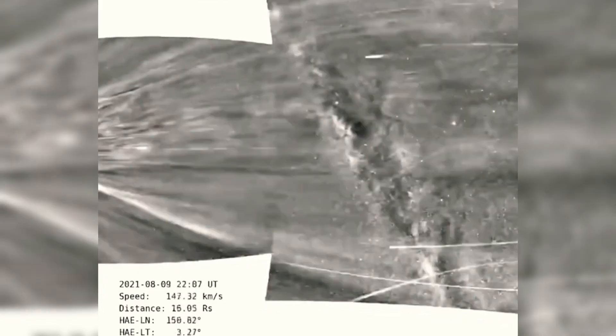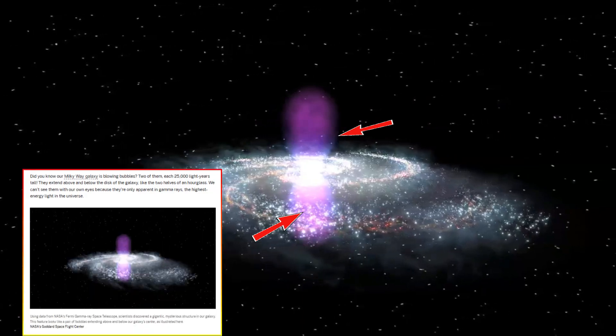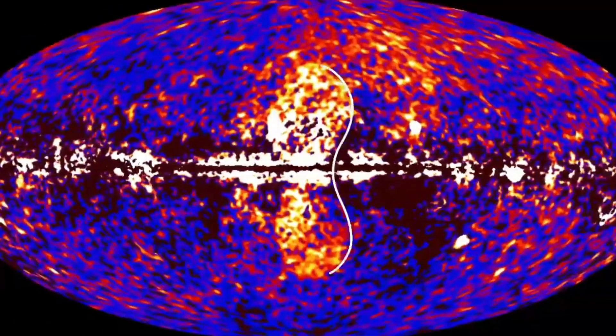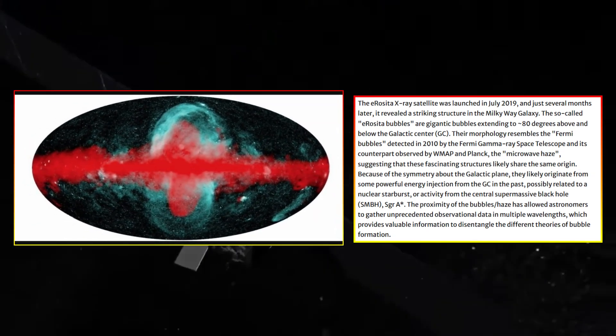Our Milky Way is hiding something truly massive: two colossal cosmic bubbles stretching tens of thousands of light years above and below our galaxy. These enormous structures, brimming with high energy radiation, remained undiscovered until just a decade ago.